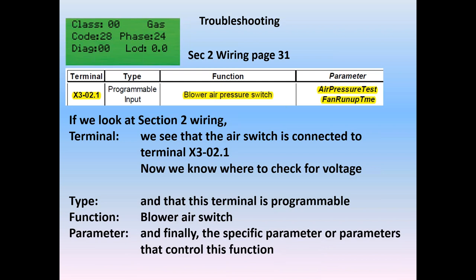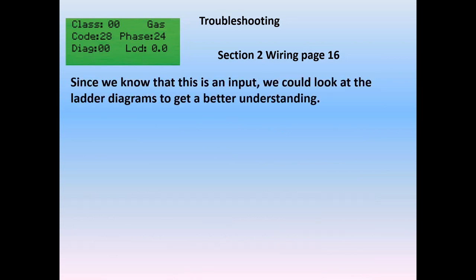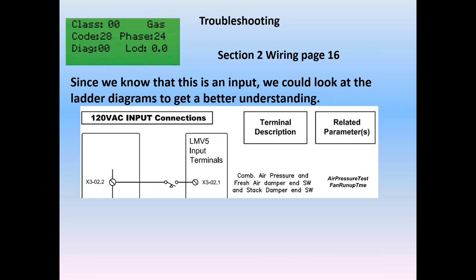We know the parameters that control this terminal — in this case, two parameters: air pressure test and fan run-up time. Air pressure test will activate or deactivate the input; fan run-up time will set the amount of time we get to make the air pressure once the fan is started. Also in the wiring section, since we know this is an input, we can look at the ladder diagrams for a better understanding. We go to the 120-volt input, section 2, page 16, and we see that the combustion air pressure switch is in fact connected to X302.1, controlled by the parameters air pressure test and fan run-up time. All through the tech support manual, we constantly tell you the terminal number, the function, and the related parameters — covered in the wiring chart, parameter programming, diagnostics, and troubleshooting.